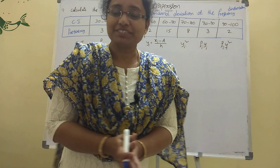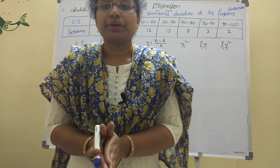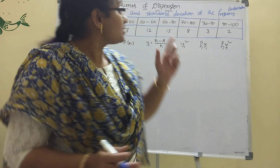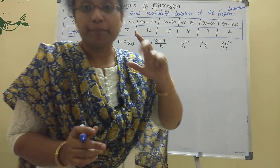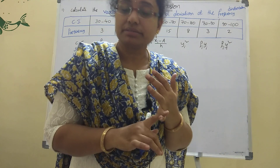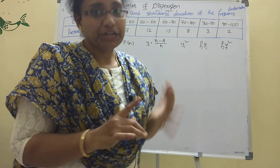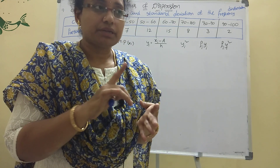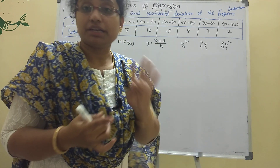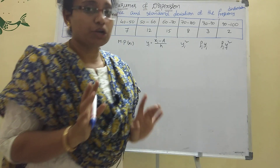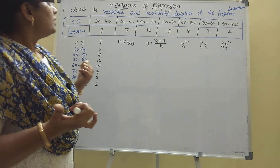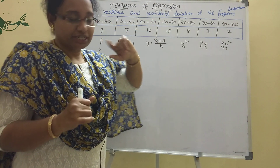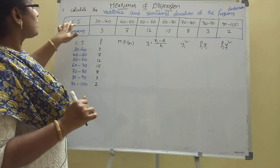Hi children, welcome to my channel. Today we are on topic 2A: measures of dispersion. This includes variance, standard deviation, mean deviation with the mean, and mean deviation with the median — four types in total. Let's start with variance and standard deviation, where a class interval and frequency table is given.